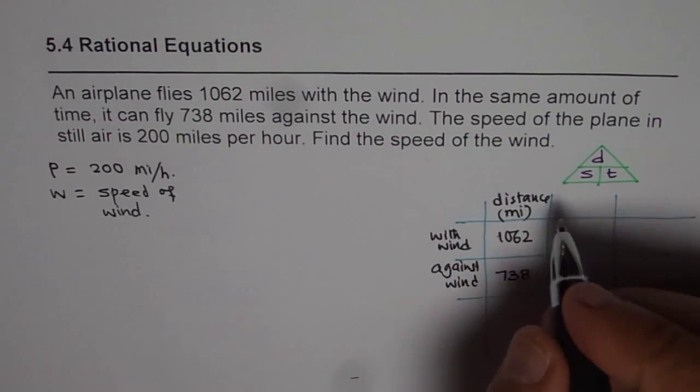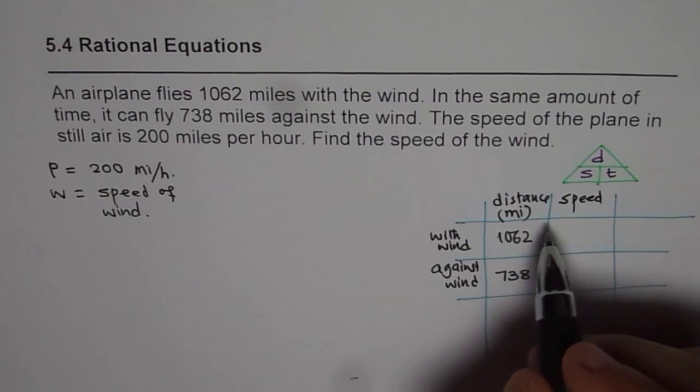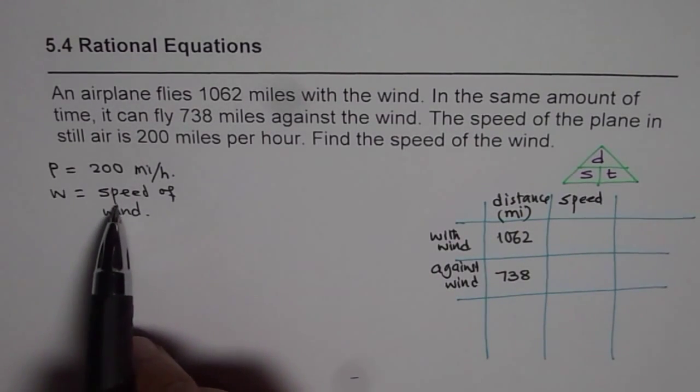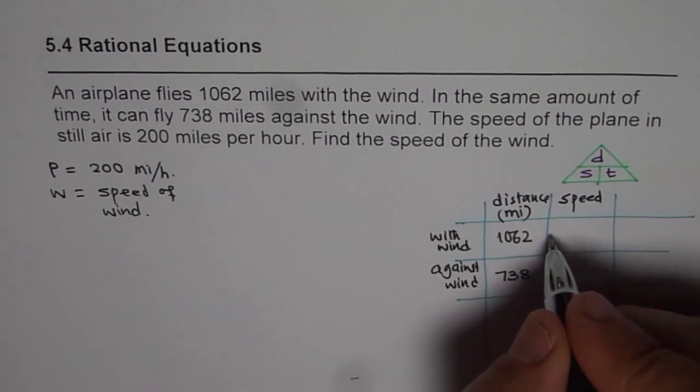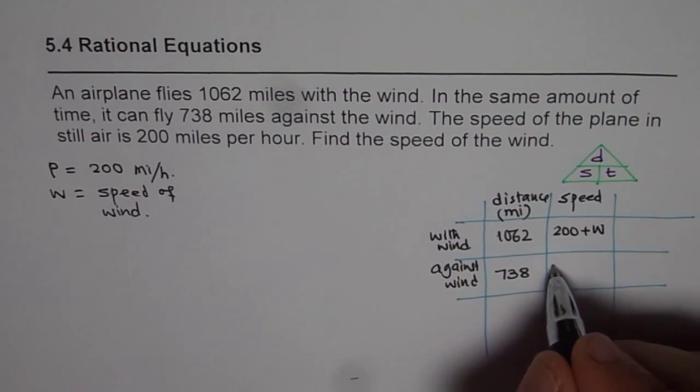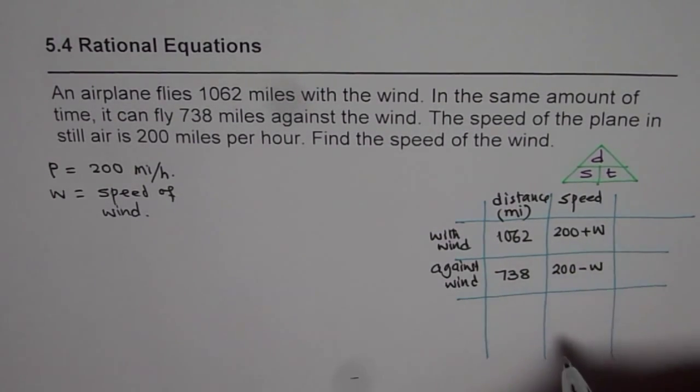Now what is the speed of the plane? When the plane is flying with the wind, then the plane speed will get added to the wind speed. The plane speed is 200. So we can say 200 plus w. But when it is going against, the wind is against. That means minus w. That is the speed.